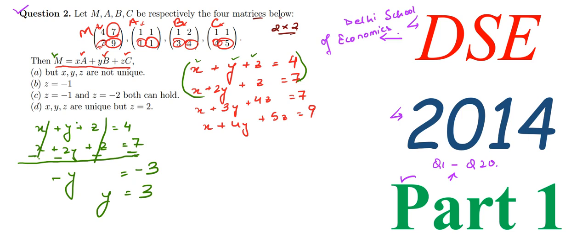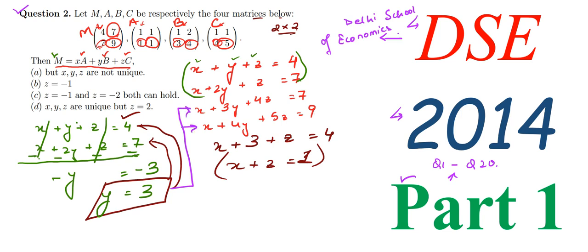Now we can put this value in any equation and we will get an equation consisting of x and z only. Let us put this in our first equation. This will be x plus y is 3, plus z equals 4, hence x plus z equals 1. We have got an equation consisting of x and z only. We can again put this value in any of these two equations. Let us put this value in our third equation. This will be x plus 3 times 3 is 9, plus 4z equals 7. Solving: x plus 4z equals minus 2.